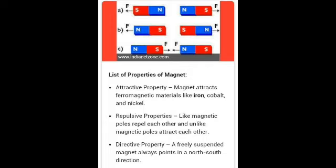Repulsive property: like magnetic poles repel each other and unlike magnetic poles attract each other. This is called the repulsive property.